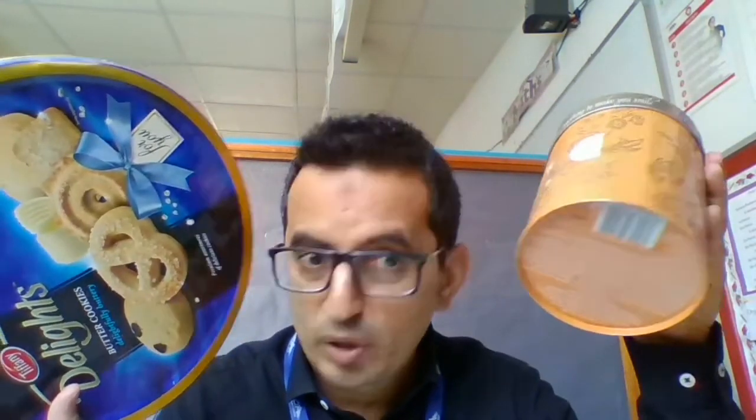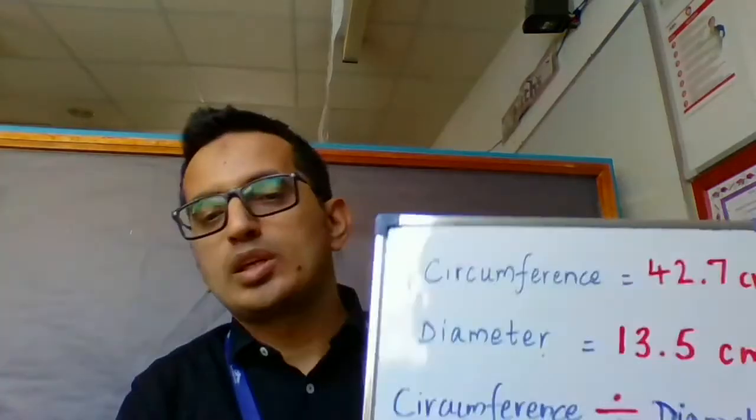Repeat this experiment with different circular objects — whatever you find in your house. Make sure to find the circumference and the diameter in each case, and divide the circumference by the diameter to get the ratio. Once you're done with at least about three — the more the better — try to find out the relationship between the circumference and the diameter. Then use Flipgrid to explain your reflection about your project: what you found, what you discovered.